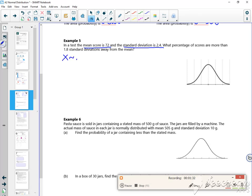In a test the mean score is 72 and the standard deviation is 2.4. So I know that X follows a normal distribution of 72, 2.4 squared.